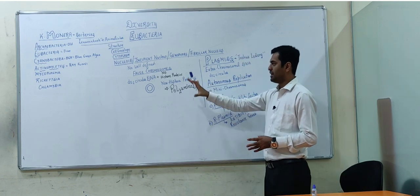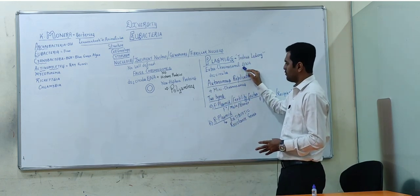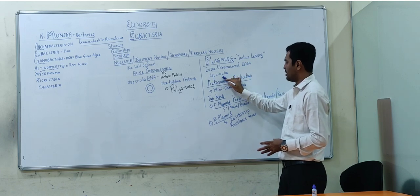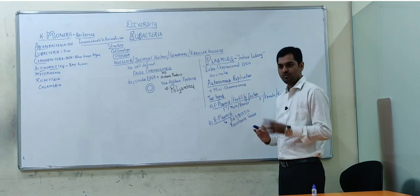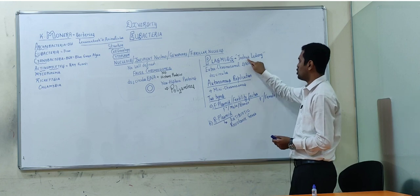Apart from this main DNA, there is an extra-chromosomal DNA which is also double-stranded and circular, known as plasmids, which were discovered by scientist Joshua Lederberg.